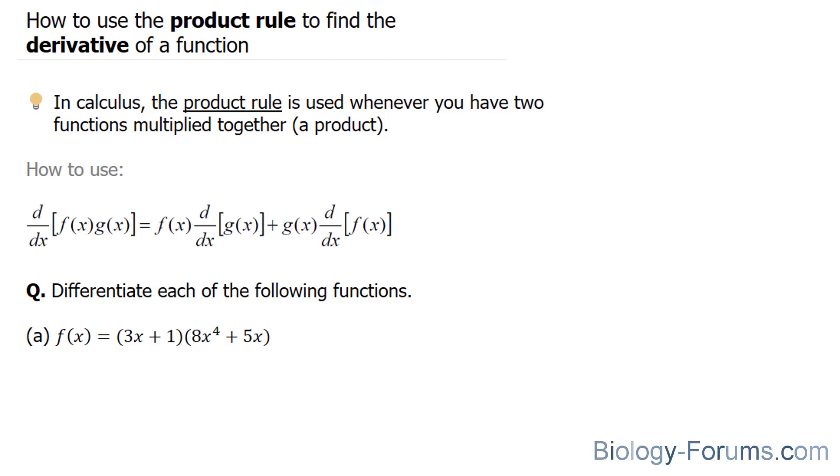The way you use the product rule is shown here. You leave the first function the way it is and find the derivative of the second, and then you add the derivative of the first function multiplied to the second function.